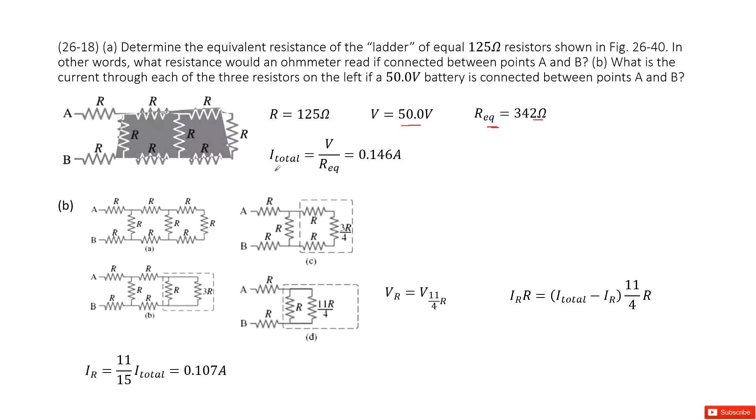So very easily, the total current should be the total voltage over the equivalent resistance. So that is V over R_eq. That is 0.146 amperes.